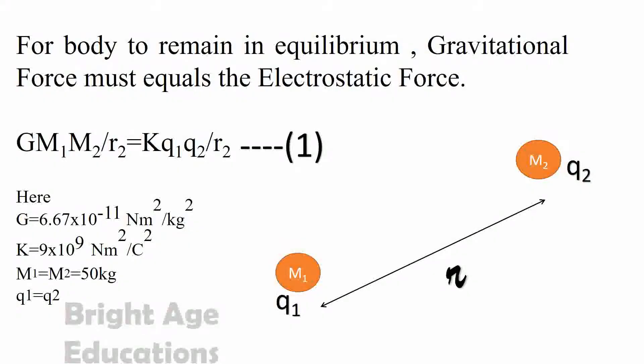So just equating these two forces, Gm1m2 by R square equals Kq1q2 by R square. G is 6.67 into 10 power minus 11 Nm square per kg square. K equals 9 into 10 power 9 Nm square per coulomb square. M1 equals M2 which equals 50 kg and Q1 equals Q2.